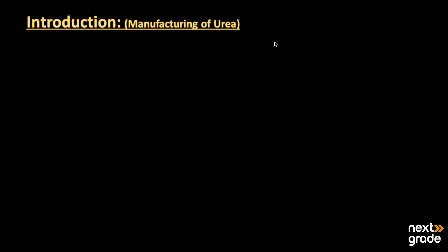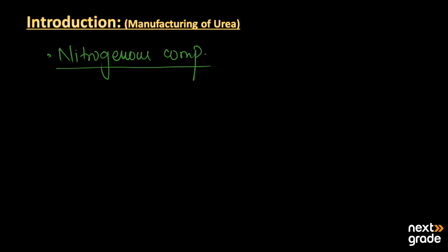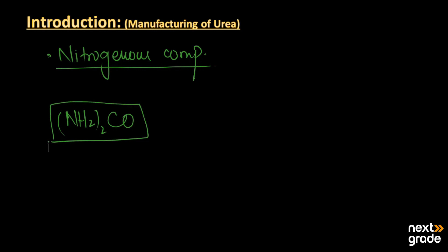Asalaamu Alaikum my dear students. Today we will discuss the formation of urea, or the manufacturing of urea. Urea is basically a nitrogenous compound, meaning a compound that contains nitrogen. The formula for urea is (NH₂)₂CO. Urea consists of 46.6 percent nitrogen, which is why it is called a nitrogenous compound.